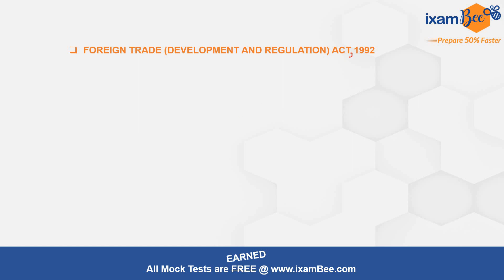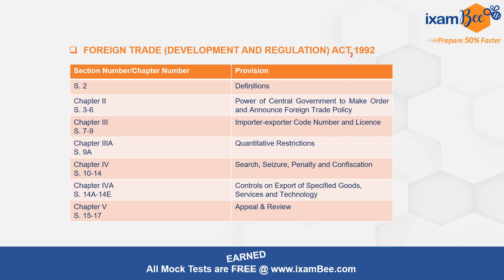The important provisions under FTDRA 1992 — Section 2 is the definition provision, as is common. Then Chapter 2 talks about the powers of the central government to make orders and announce foreign trade policies. Foreign trade policy-related powers of the central government, going ahead and making orders with respect to foreign trade policy and announcing all those, have been covered under Sections 3 to 6. Chapter 3 covers Sections 7 to 9, dealing with importer-exporter code numbers and license-related provisions.